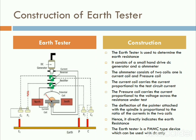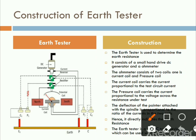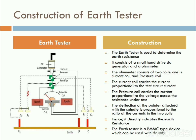Construction of Earth Tester. This is a schematic diagram of Earth Tester. The Earth Tester is used to determine the earth resistance – that is, to find the resistance of the ground. It consists of a small hand-driven DC generator and an ohmmeter.